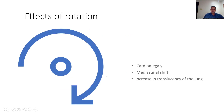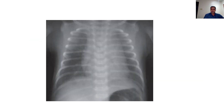The problems of rotated films include false cardiomegaly, mediastinal shift, and increased translucency of the lungs. Here is an example of a well-centralized X-ray. We use the lower part of the ribs to judge centralization: draw a line in the midline, then a line from the midline to the inner border of the ribs on the left side, and again on the right side. If the two lines are equal, the X-ray is centralized.